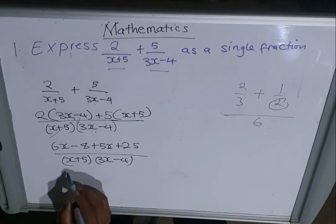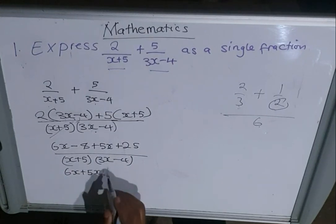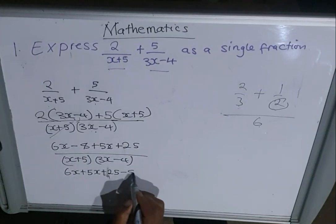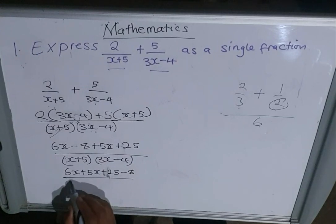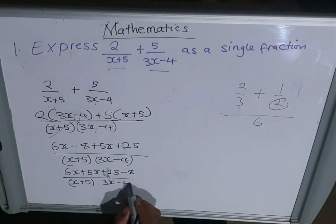Over (x+5) and (3x-4). On top you collect like terms: 6x is a like term of 5x, then we have positive 25 which is a like term of negative 8, over (x+5)(3x-4). Here on top you can add or subtract where possible.